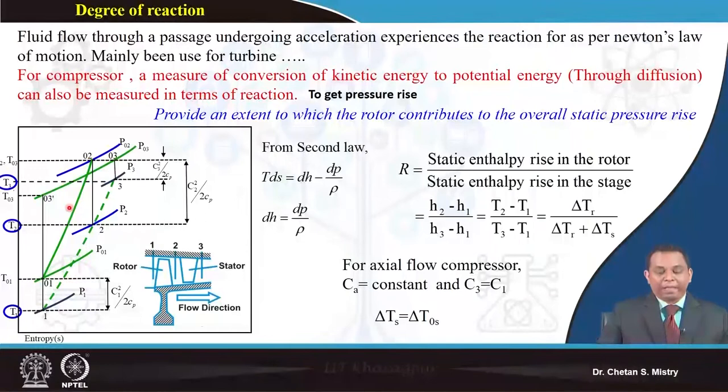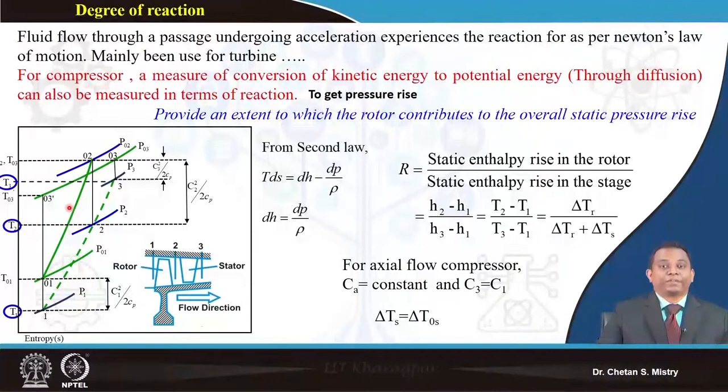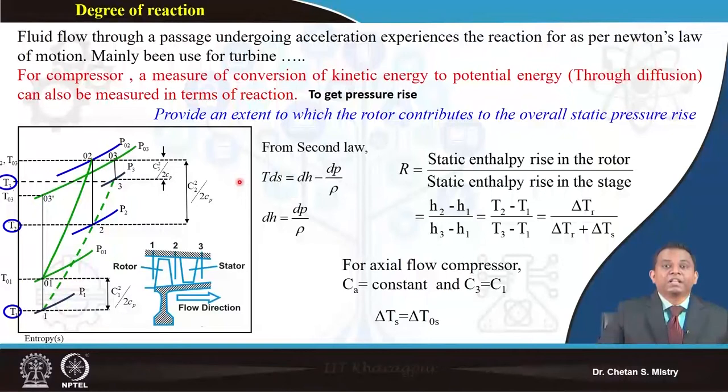For compressors, the measure of conversion of kinetic energy into potential energy through diffusion can also be measured by the reaction parameter - telling us what pressure rise we are getting. From the second law we can write T ds = dh - dp/ρ. If we consider the compression process to be isentropic, enthalpy and pressure are related.